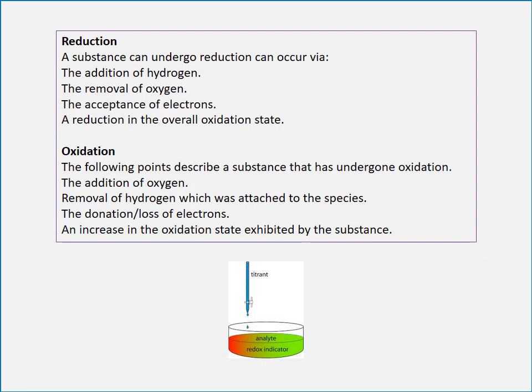We are going to talk about reduction and oxidation. A substance can undergo reduction via the addition of hydrogen, the removal of oxygen, the acceptance of electrons, or a reduction in overall oxidation state. Oxidation involves the addition of oxygen, removal of hydrogen attached to the species, the donation or loss of electrons, or an increase in the oxidation state exhibited by the substance.